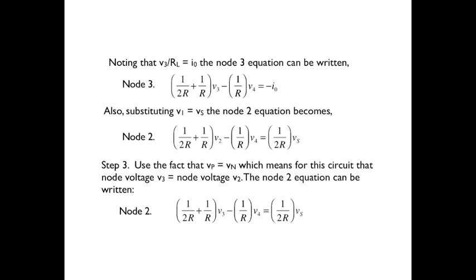Well, that's because we haven't used step 3 of our procedure. That is, the node voltage at the plus and minus inputs of the op-amp have to be equal. In this case, that would mean that V sub 2 equals V sub 3, so let's simply replace V sub 2 by V sub 3 in the node equation for that node, 2.